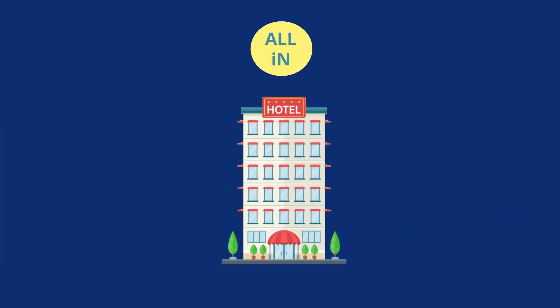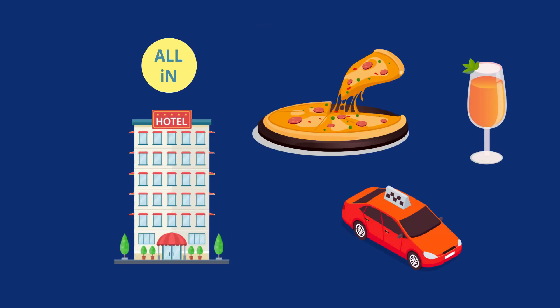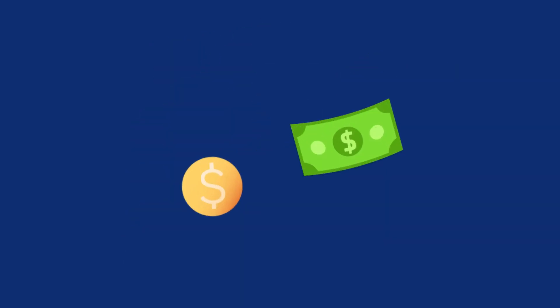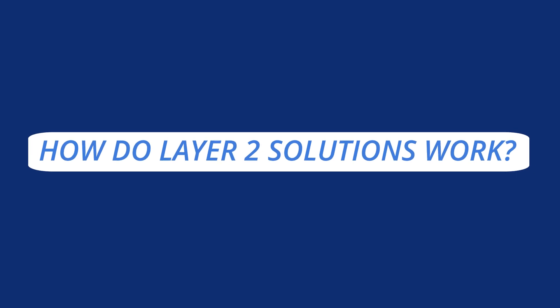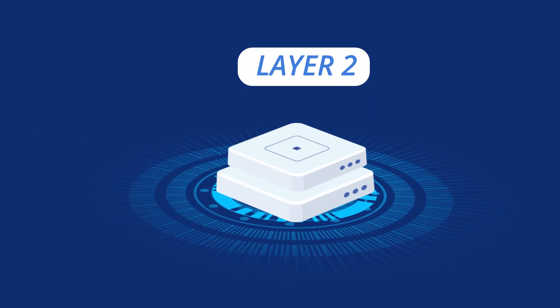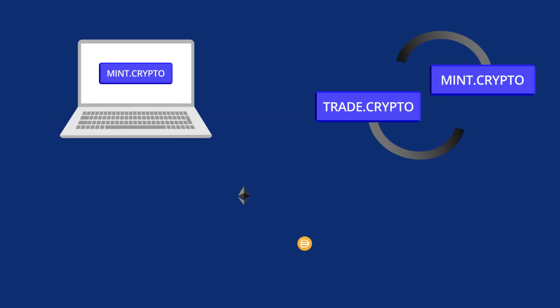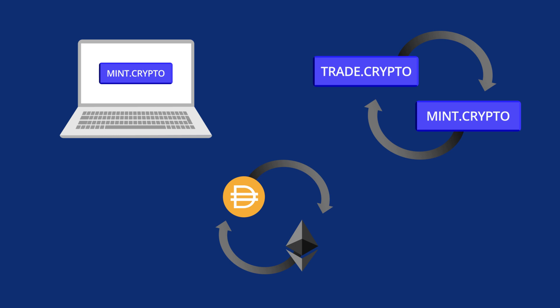So in the all-inclusive vacation, everything you eat, drink, and the services you use are all batched into a single transaction, and you don't need to worry about paying commission every time you perform a transaction. So how do layer 2 solutions work? Like the previous all-inclusive vacation example, layer 2 solutions allow us to package multiple transactions — such as minting domains, trading domains, and all other activities — and submit them all as one transaction after a programmed period of time.